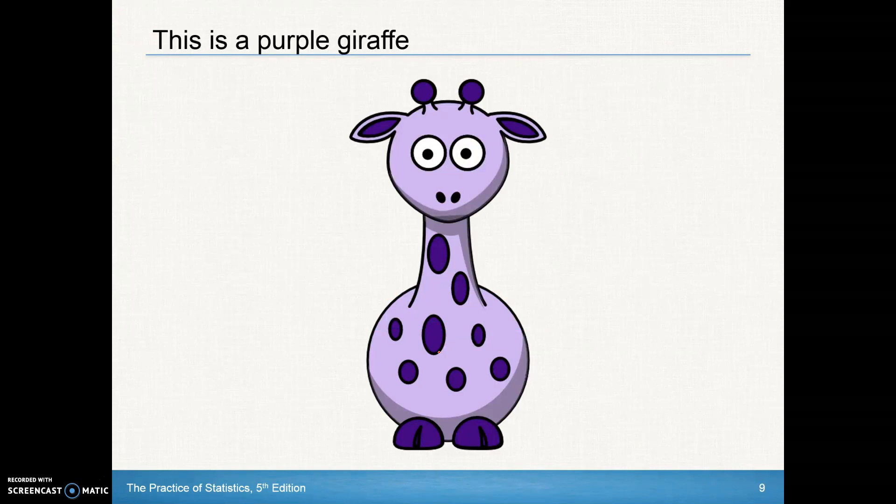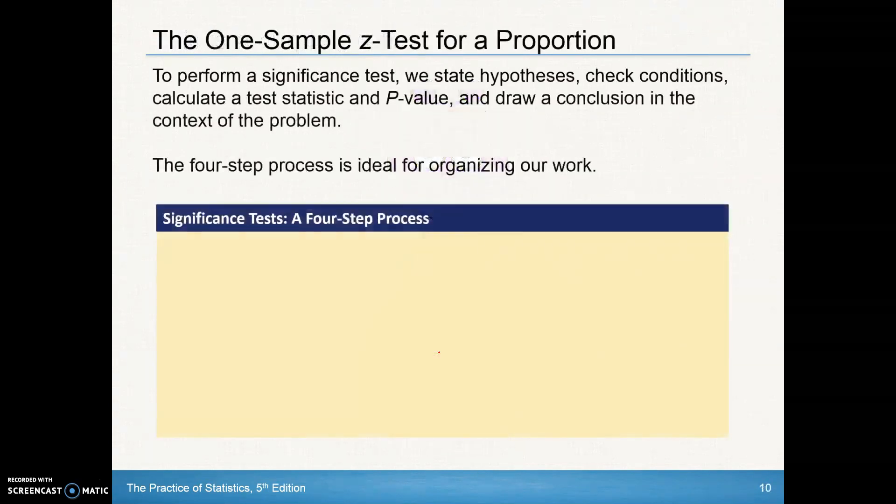Well, here's a purple giraffe for you. To perform a significance test, we state hypotheses. Okay, that's what's going to go in box one of your four-step process. If you look at that four-step process here, the hypotheses will go into that box one. That's where your null and alternative hypotheses go.